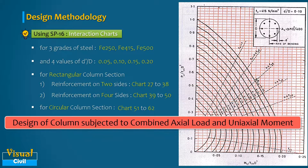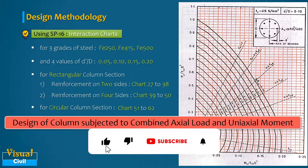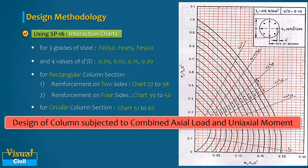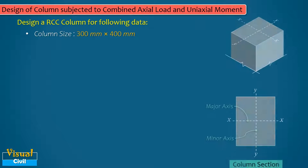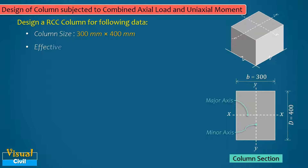Let us understand the complete design procedure for a column subjected to combined axial load and uniaxial moment with the help of a numerical example. We need to design a column of size 300 mm × 400 mm with an effective length of 3.5 meters.